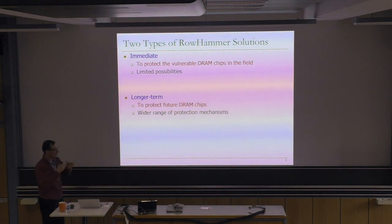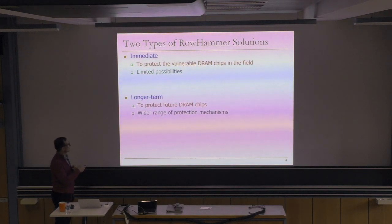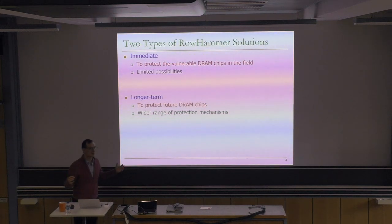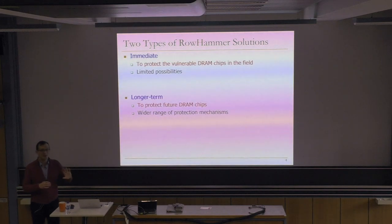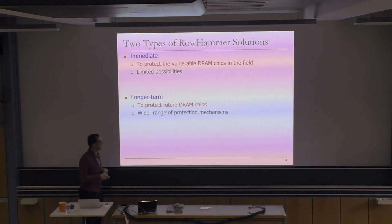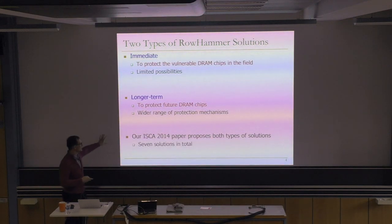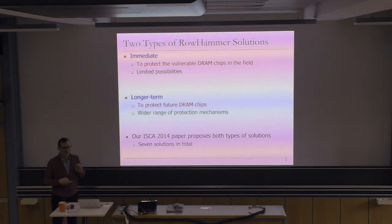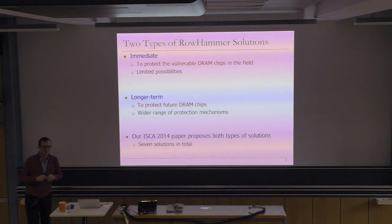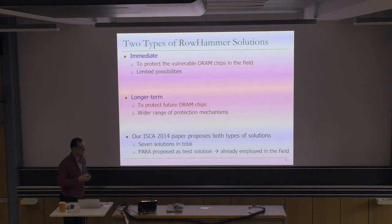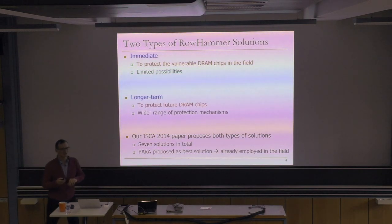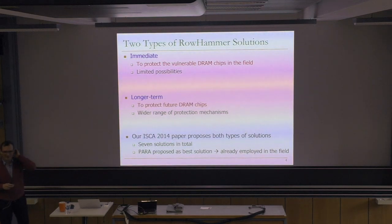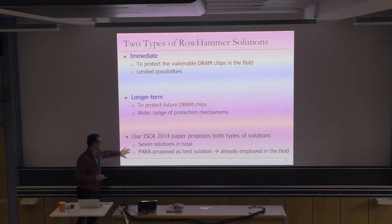Longer-term solutions: patchability could be one mechanism, but to protect future DRAM chips we have a much wider range of protection mechanisms. We can change the DRAM chips and change the memory controllers — even without making them patchable, we can change them to fix Rowhammer-type problems. We discussed both types of solutions. We've discussed probabilistic adjacent row activation as the best solution, which is already employed in the field today.